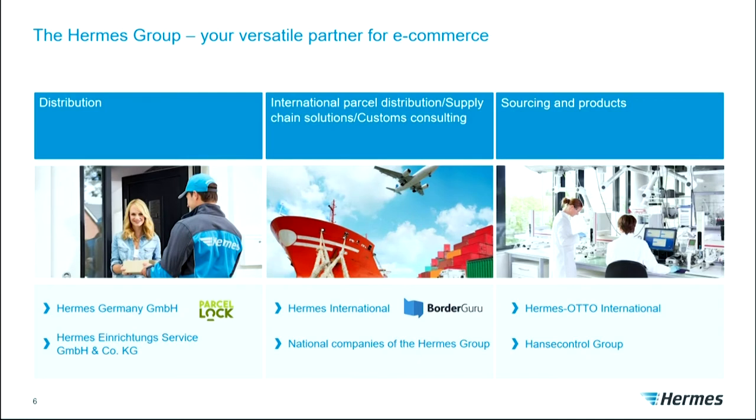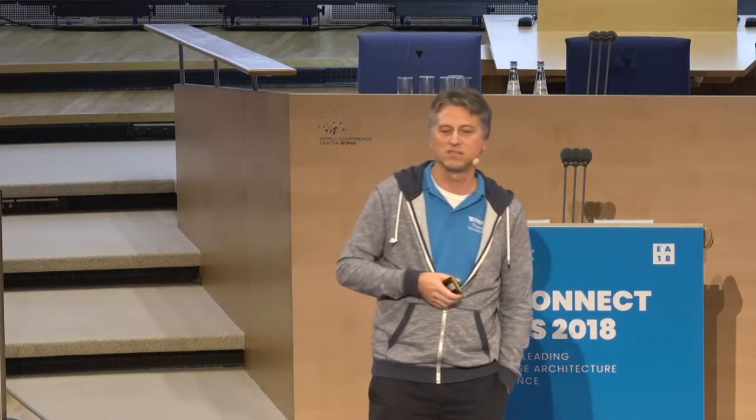So, Hermes group. Probably you know Hermes from parcels — when you get parcels at home from Amazon, Otto, Zalando, or wherever. But we are quite more than only parcel delivery. We have the so-called Hermes Einrichtungsservice, bringing large furniture and kitchen items. We also have international supply chain solutions and consulting, as well as sourcing for products — mainly through Hansa Control — where goods from China or elsewhere are checked before delivery.